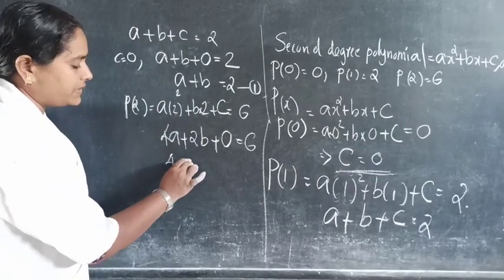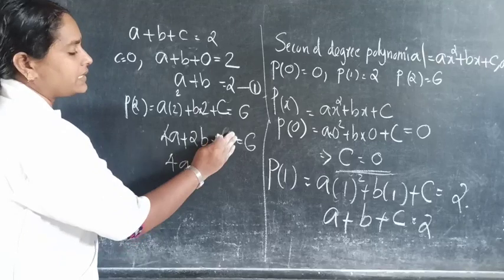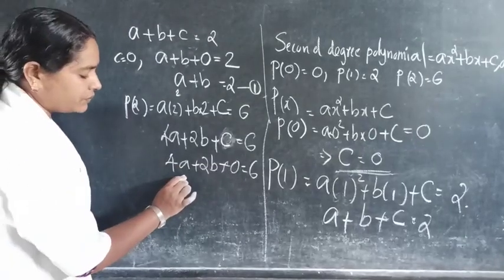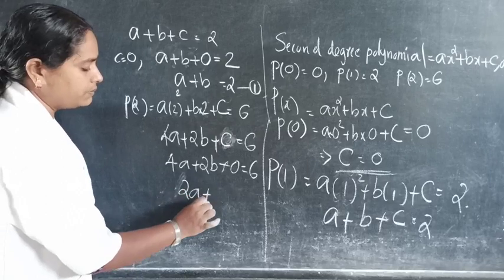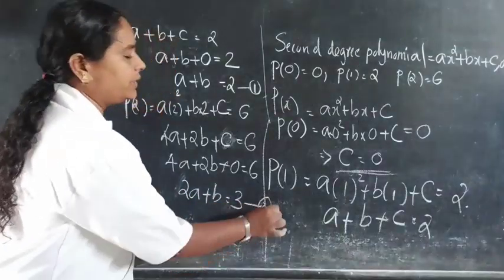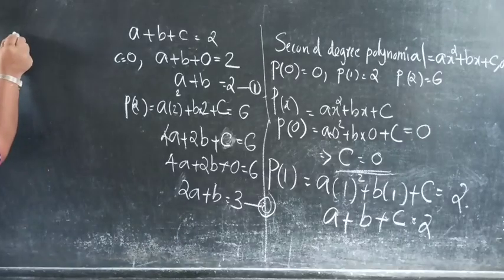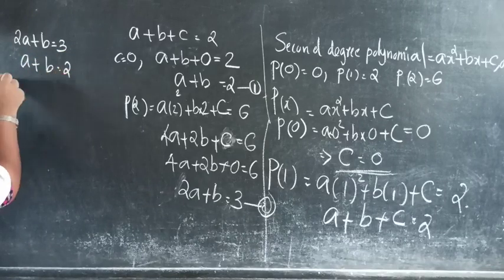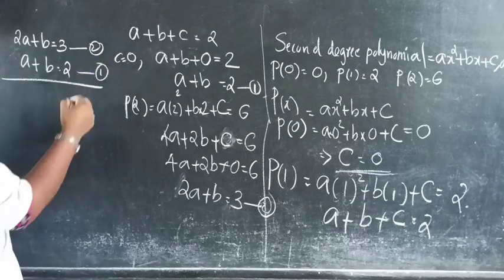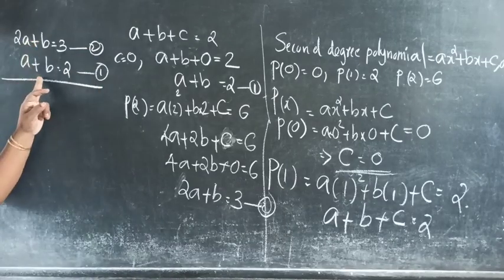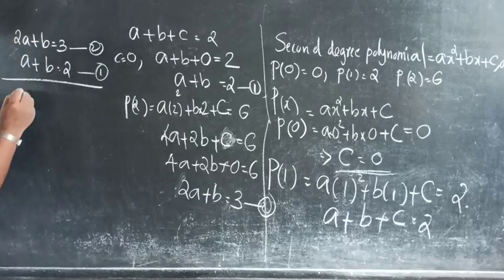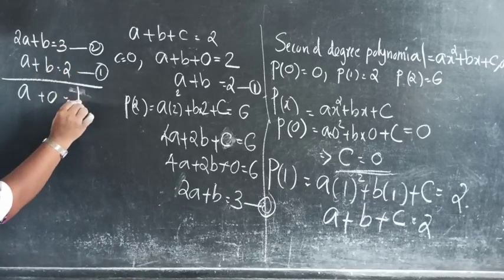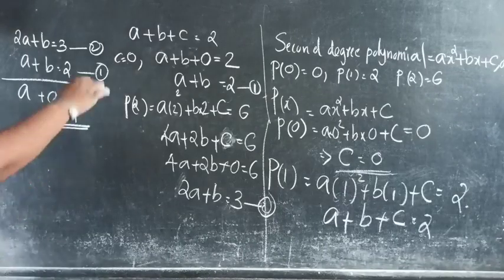So we have 4a plus 2b equals 6, which simplifies to 2a plus b equals 3. That is condition 2. From condition 1: a plus b equals 2. Subtracting condition 1 from condition 2: 2a plus b minus (a plus b) gives a equals 1.